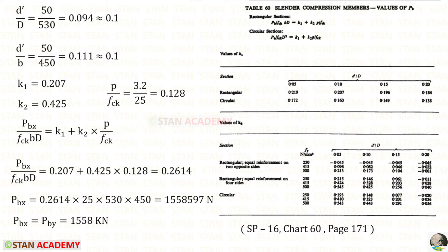From this table, we can find K2. Our section is rectangular. In the question, it is given that on all the 4 sides, equal reinforcement is provided. Our FY is 500. And D dash upon D is 0.1. In this case, K2 is 0.425. The percentage of steel, we know 3.2. FCK is 25. For P upon FCK, we will get 0.128. In this, we can apply these three values. D is 530 and B is 450. For PBX, we will get this.